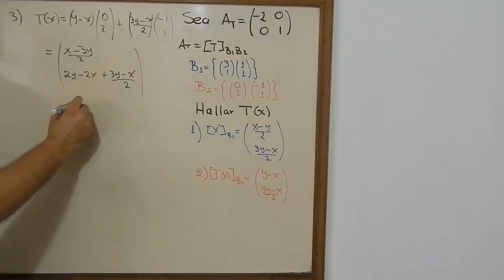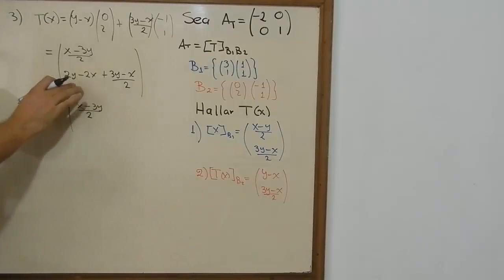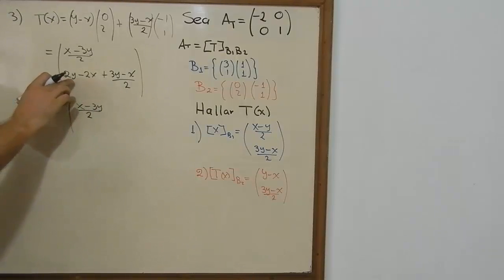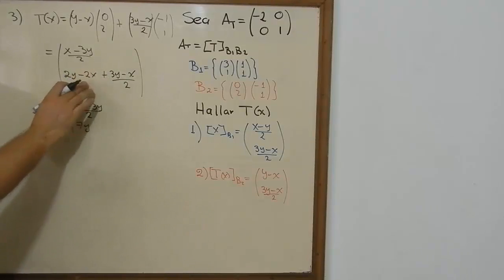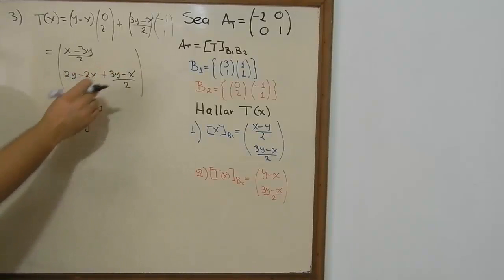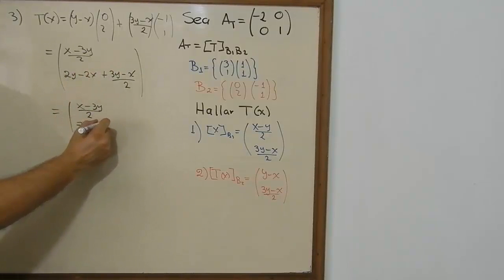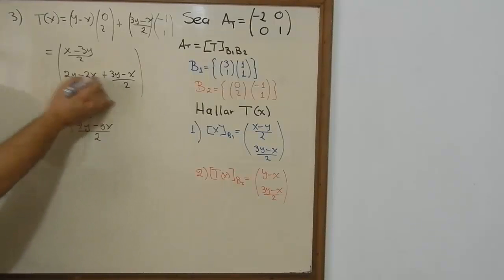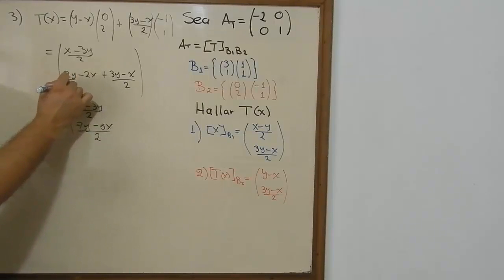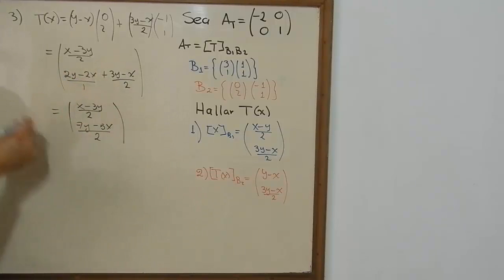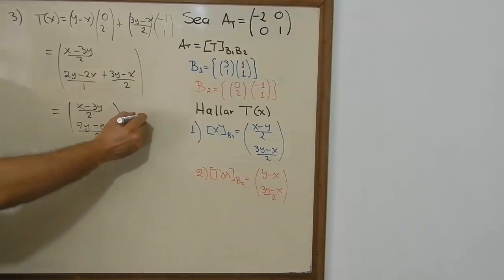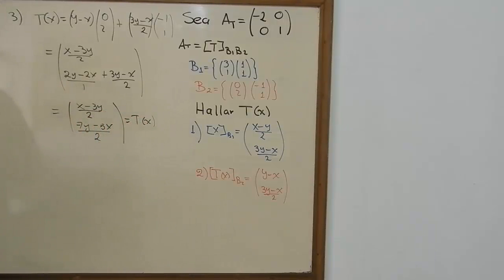Combining and simplifying all terms, we get the final answer. The result is the vector [(x − 3y)/2; (7y − x)/2], and that is the transformation expressed in a canonical base.